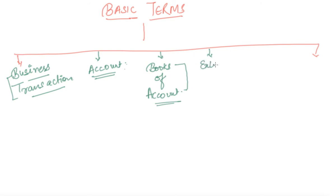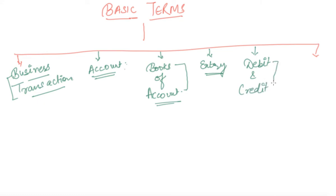Next, entry. As I said, while preparing accounts we should know in which account an entry should be placed. But without knowing what entry means, can we post any entry? Obviously not. So we should be aware of what entry means as well. Next, debit and credit. These two terms are very important — without them no account can be prepared. Without debit or credit, no book of account can be prepared. Next, proprietor.